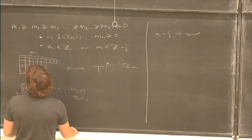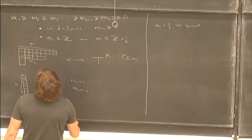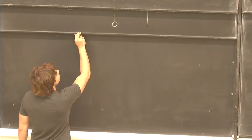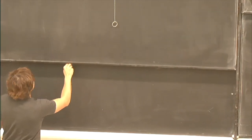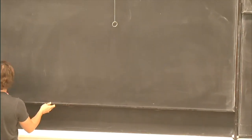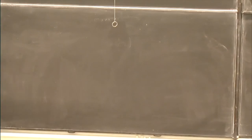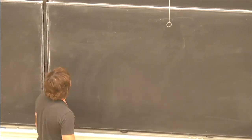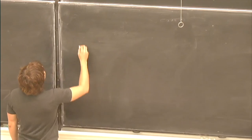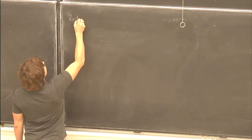One last thing I want to mention about representation theory is the relation — how you reduce your representations from Spin(D) to Spin(D-1) and so on. This is the reduction.